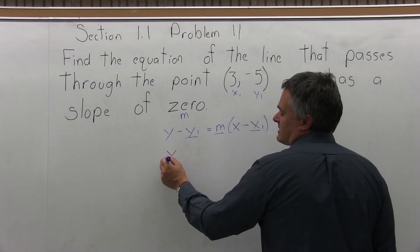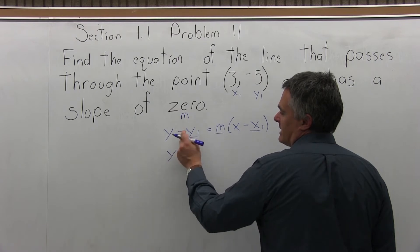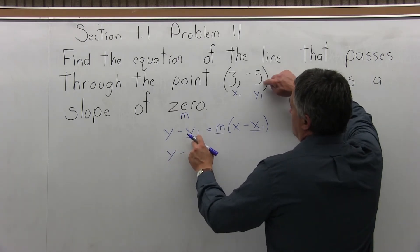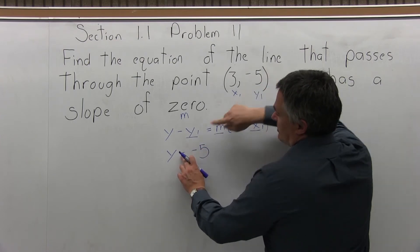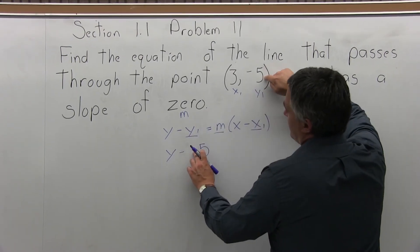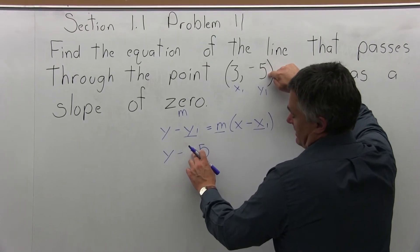We start with y, that stays, doesn't have an underline. The minus stays. y1 is negative 5. Again, pay attention to the negatives. There are 2. One negative from the formula, the other negative from the fact that this 5 is a negative 5.